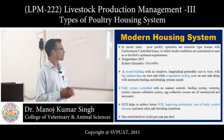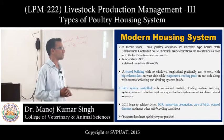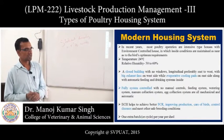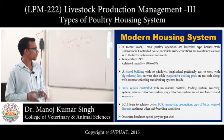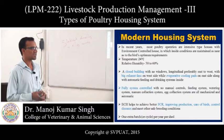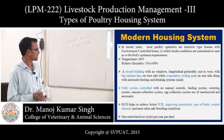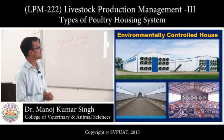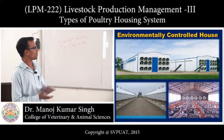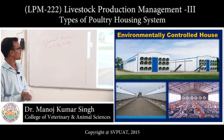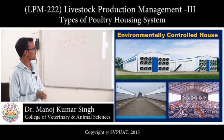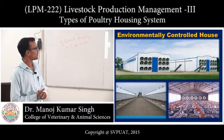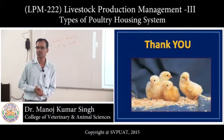Environment-controlled housing helps achieve better feed conversion ratio, improves production, ensures better care of birds, controls diseases, and meets safe breeding conditions. We can also get one extra batch per cycle. The picture shows the environment-controlled housing with exhaust fans arranged and all systems controlled automatically. Thank you students.